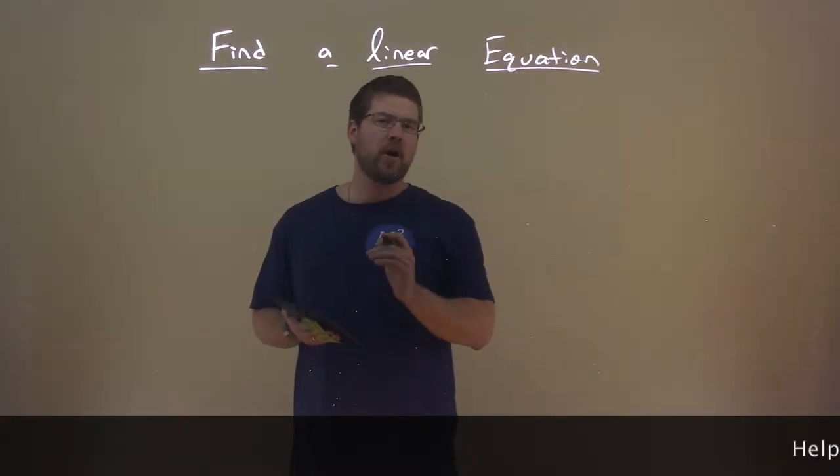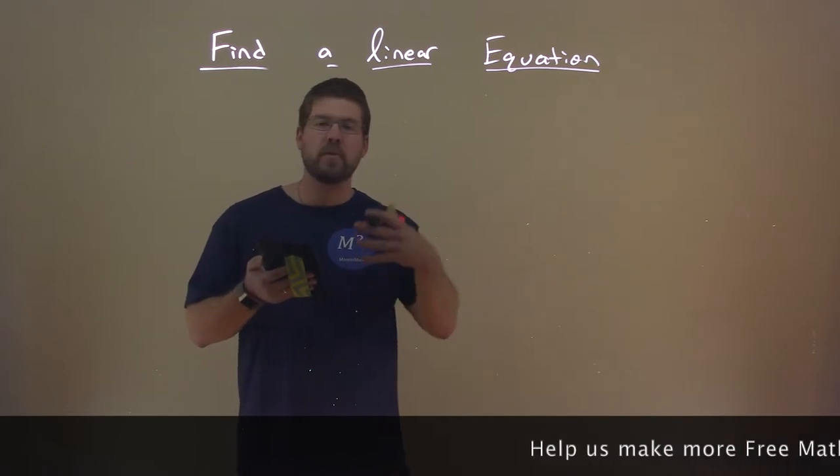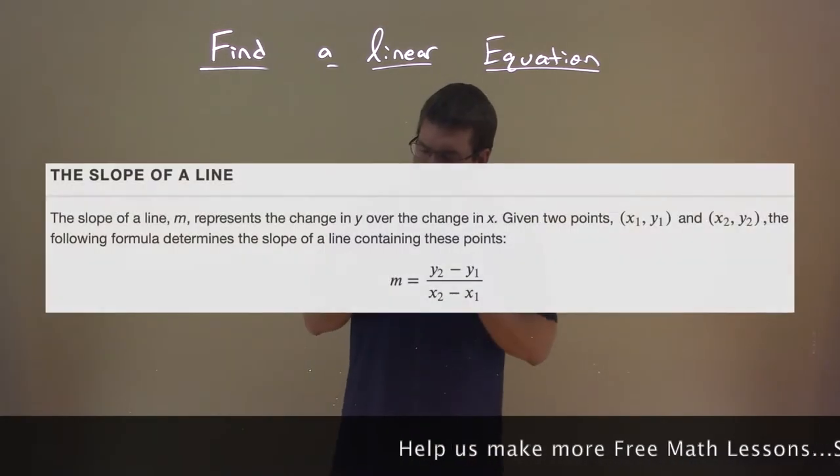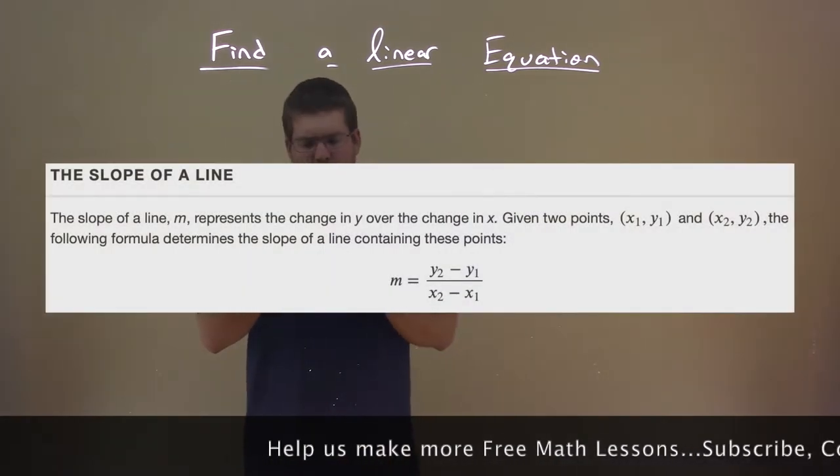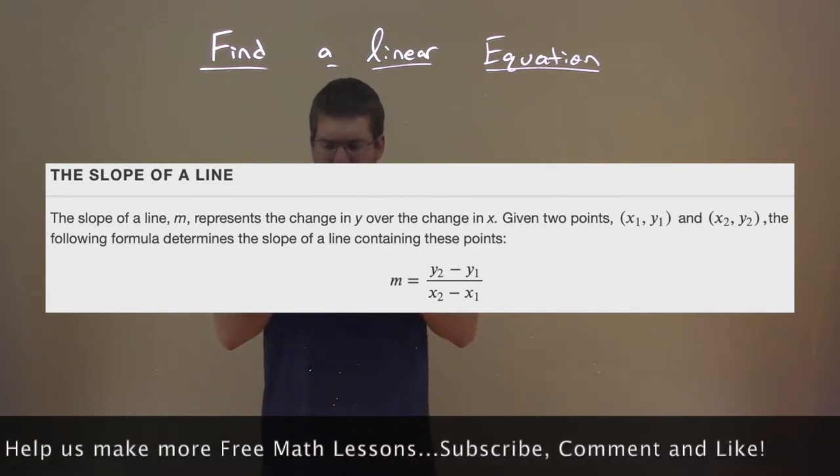We're going to start off with this video with a definition, the slope of a line. The slope of a line, M, represents the change in Y over the change in X.